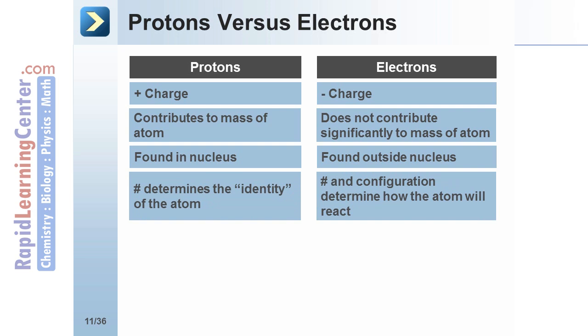Protons determine the identity of the atom. All atoms of carbon have 6 protons. The electrons determine how atoms will react with other atoms and energy.